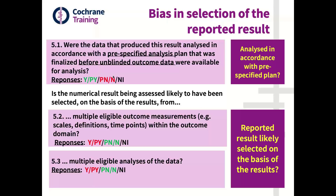Here again, you're going to answer yes or probably yes, which will move toward high risk of bias; or no, probably no — meaning they were not selected on the basis of the results — which will move toward low risk of bias; and no information when you're not able to assess this.